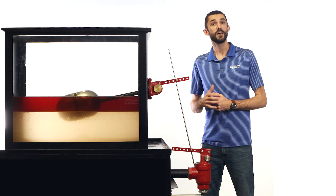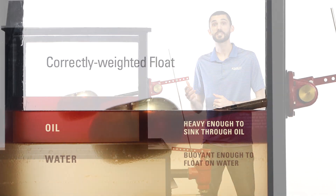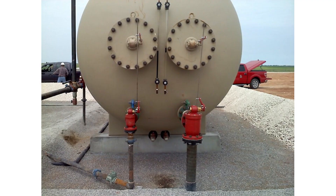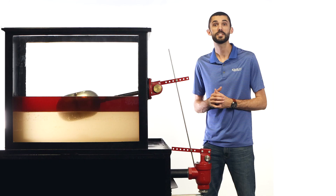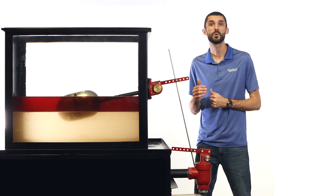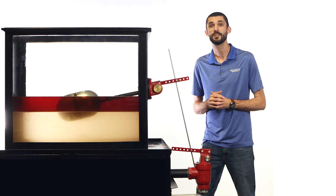Here you can see that the float is heavy enough for it to sink through the oil, but buoyant enough to float on the water. As the well matures, production fluid gravities will change, which will affect the buoyancy of the float. You can see the interface level of your vessel in the sight glass and confirm it's operating as it should. It's important to regularly monitor this level so you can adjust the float or the mechanical linkage as needed.